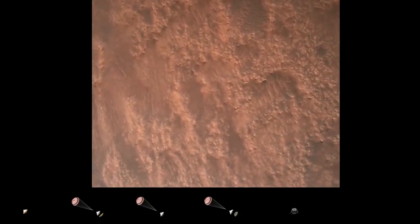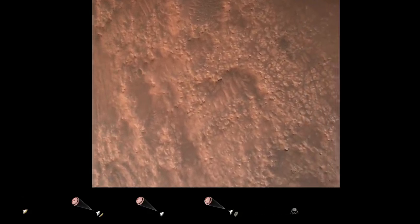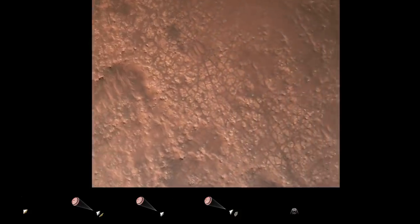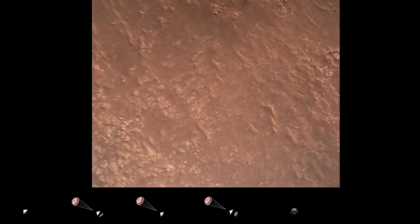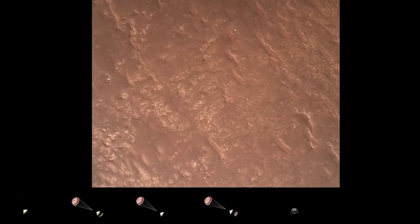We have completed our terrain relative navigation. Current speed is about 30 meters per second at an altitude of about 300 meters off the surface of Mars.